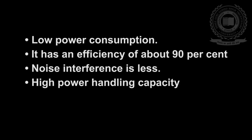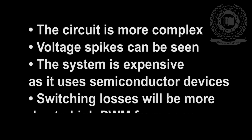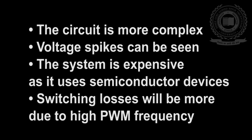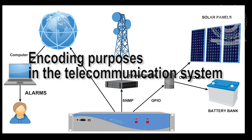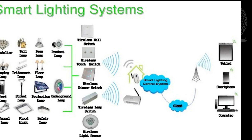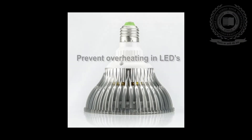Advantages of pulse width modulation: low power consumption, efficiency of about 90%, less noise interference, and high power handling capacity. Disadvantages: the circuit is more complex, voltage spikes can be seen, the system is expensive as it uses semiconductor devices, and switching losses will be more due to high PWM frequency. Applications: used in encoding in telecommunication systems, used to control brightness in smart lighting systems, and helps prevent overheating in LEDs while maintaining brightness.